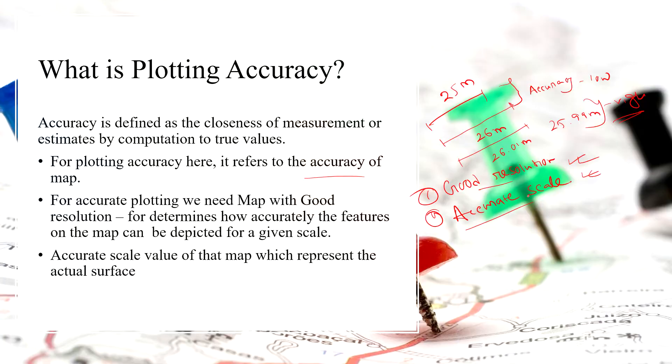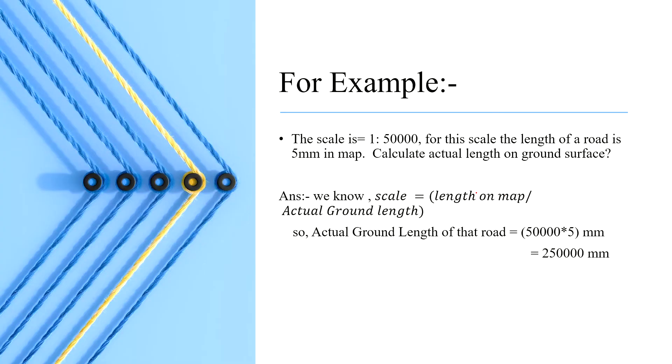For example, if the scale is given 1 to 50,000 for a map, and we have to calculate actual length of a road which is 5 mm in the map. For calculating the actual length of the road, we have to know the formula of scale. The formula of scale is length on map divided by actual ground length.